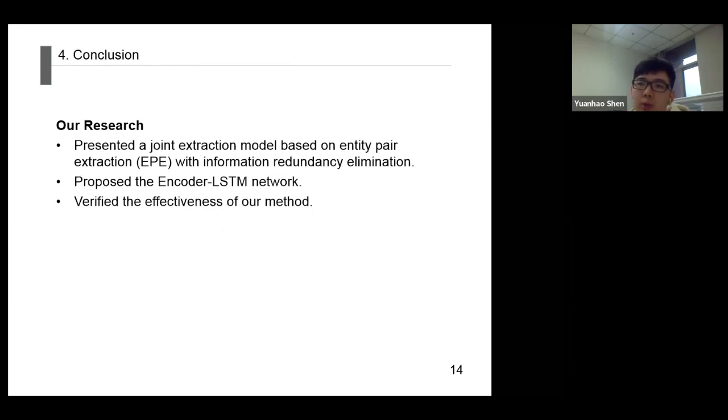In general, we proposed a joint extraction model based on entity pair extraction to solve the redundancy problem. We verified the effectiveness of the method and evaluated the performance of the model. Compared with other joint extraction methods, our method solves the problem of redundancy information while achieving excellent performance and can handle the cases with overlapping relationships. We also propose the encoder LSTM network, which improves the ability of recurrent units to model sentences.